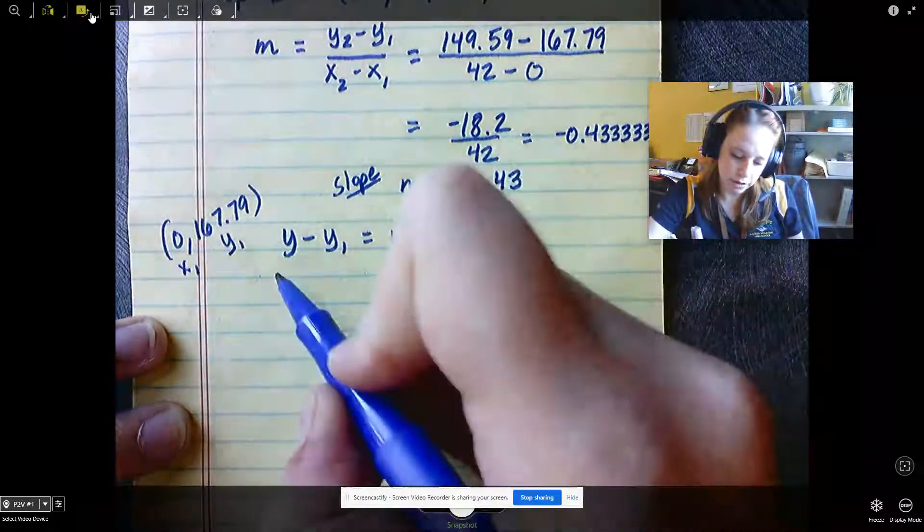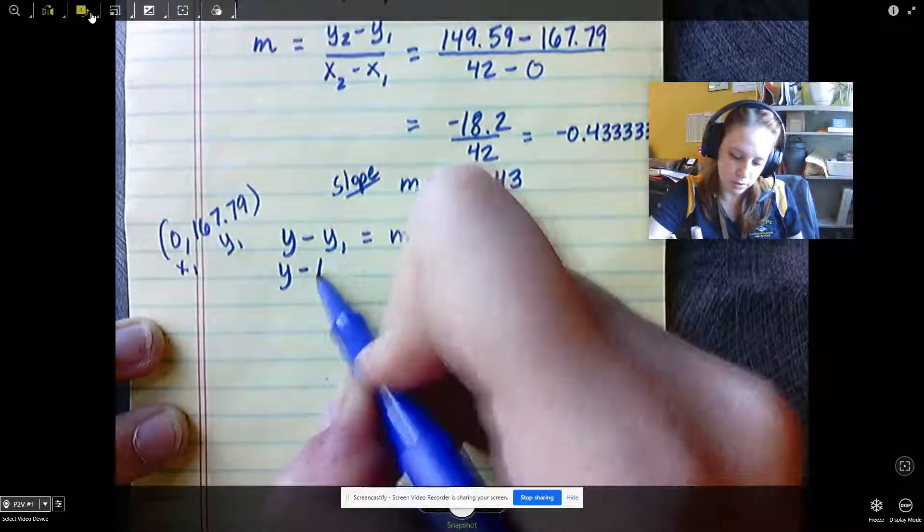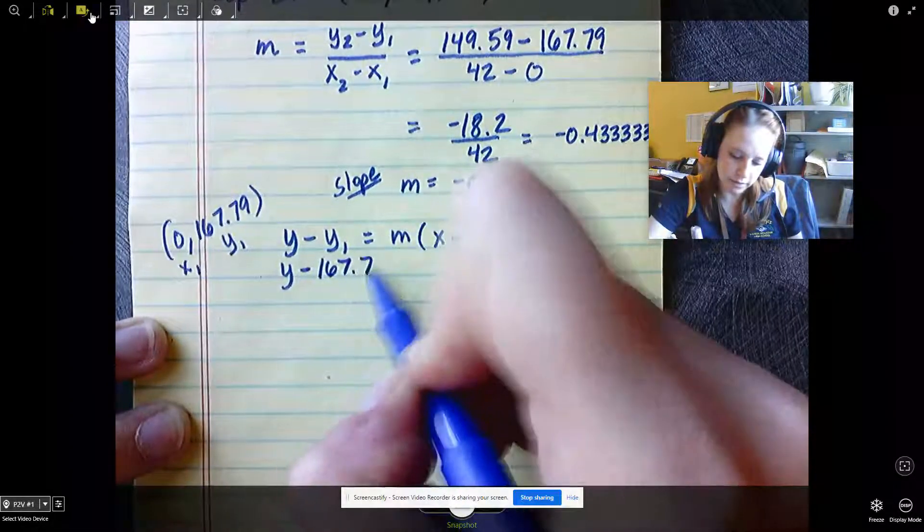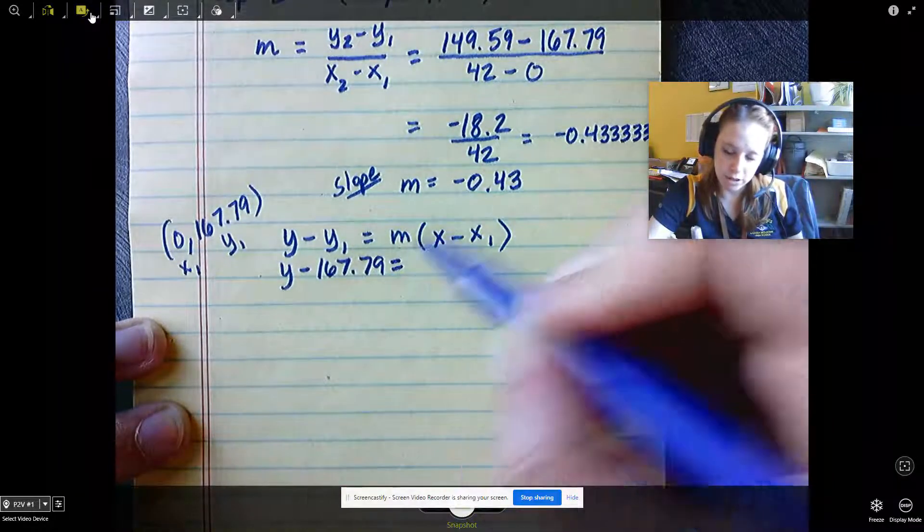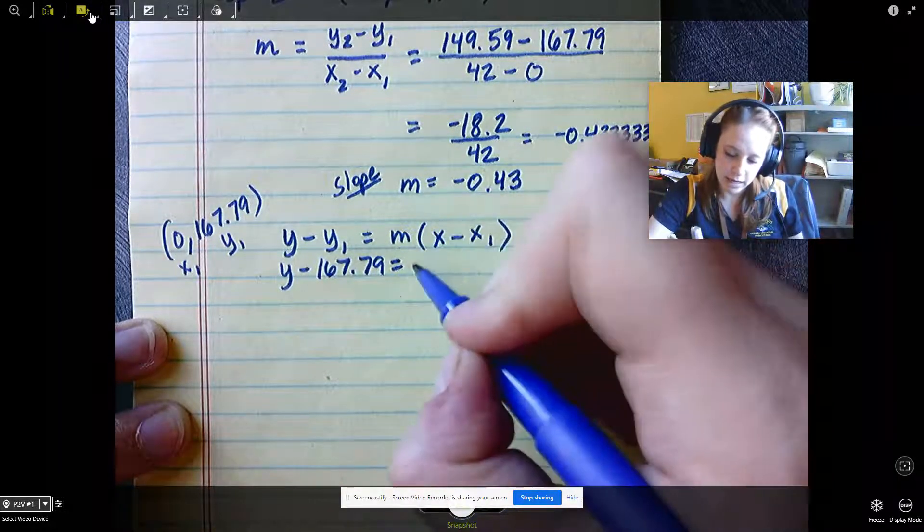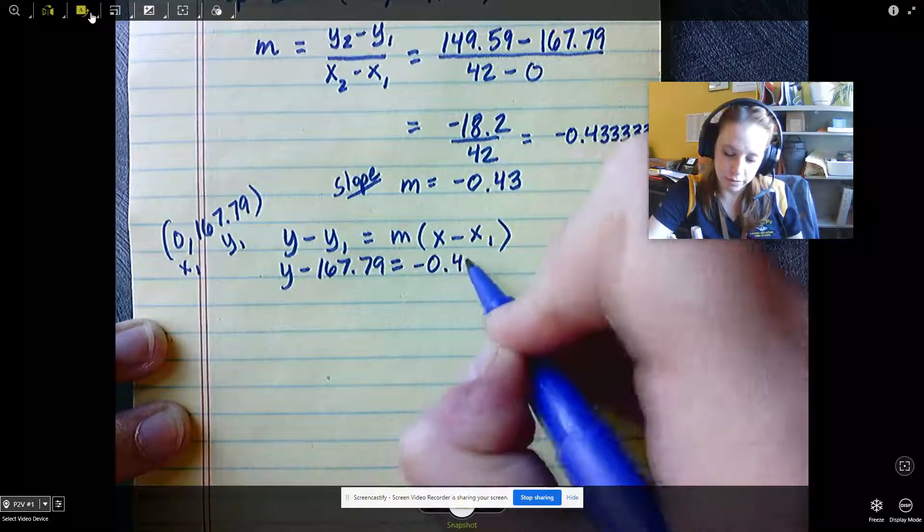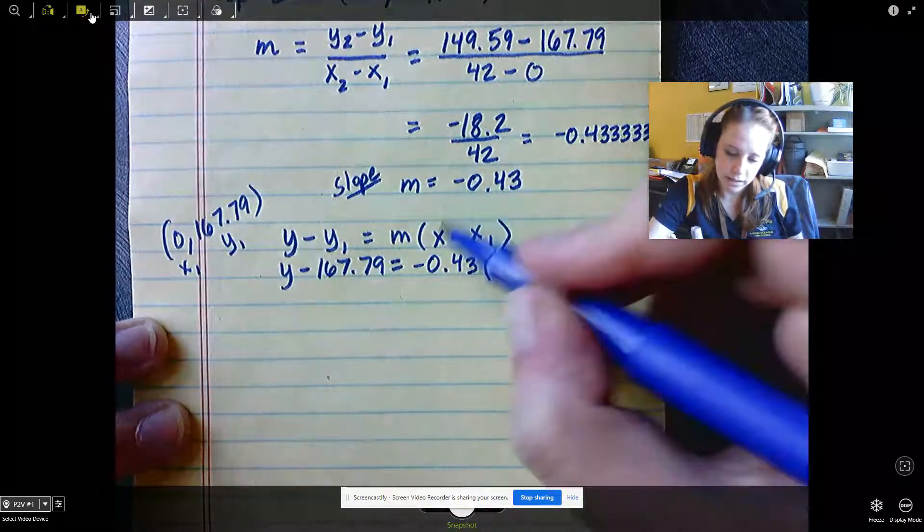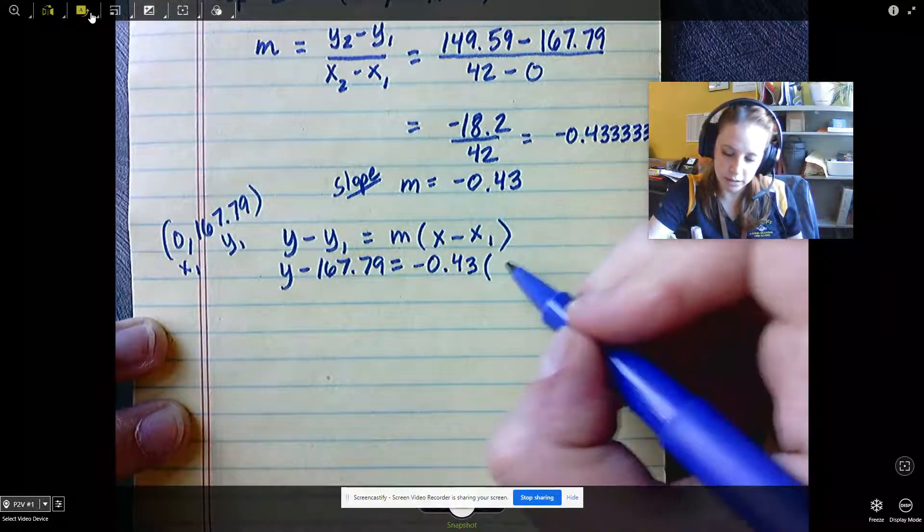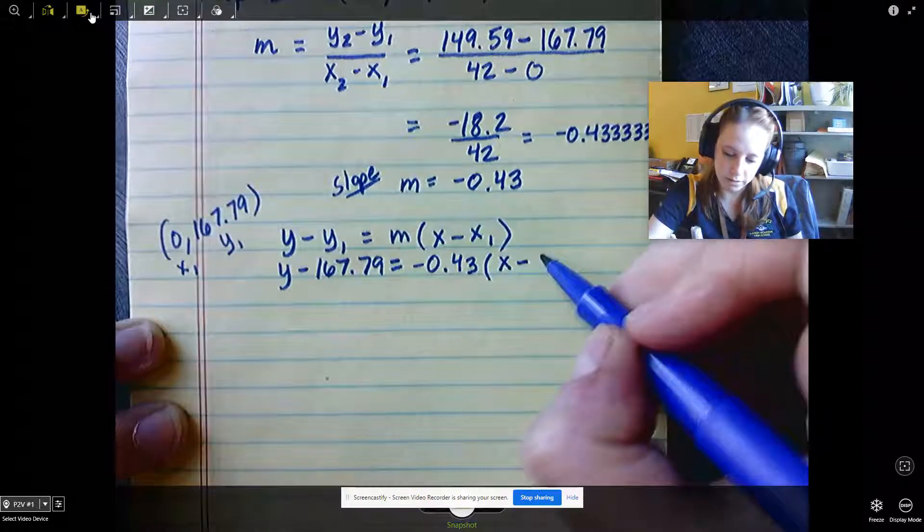Now our equation is y minus 167.79. Our m is what we just calculated from above, negative 0.43, times x minus x sub 1. x minus your x sub 1 is 0.